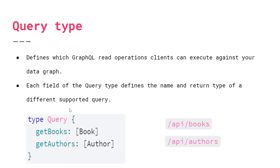What about query type? Query types are really just read operations that the client can execute against your data graph. This is the type query, and inside here you define all the queries that the client side can make to access your data. For instance, get books — that's the name of the query — and get authors. This is actually the return type. So get books is a query the client can make, and it returns a list of book, which is an object type I defined. Similarly, get authors returns a list of author.